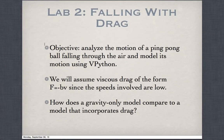This is Lab 2: Falling with Drag. The objective was to analyze the motion of a ping-pong ball as it fell through the air and then model its motion using VPython. In this lab, I assumed viscous drag of the form F equals minus bV, pointing in the opposite direction to velocity, since the speeds involved are very low.